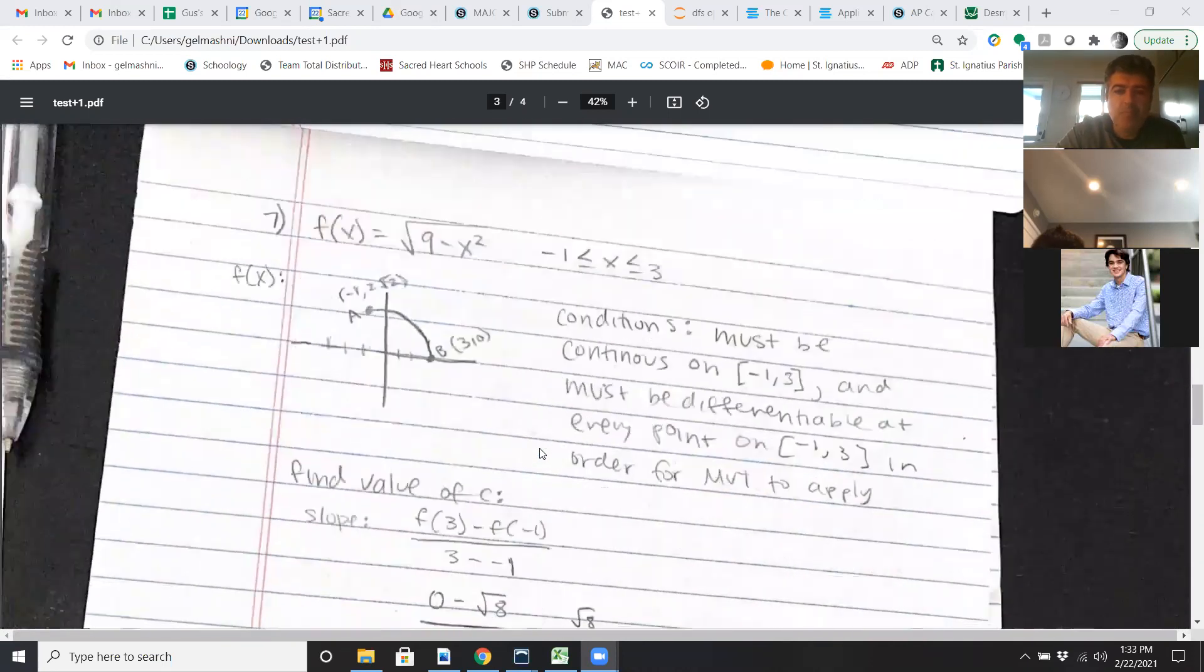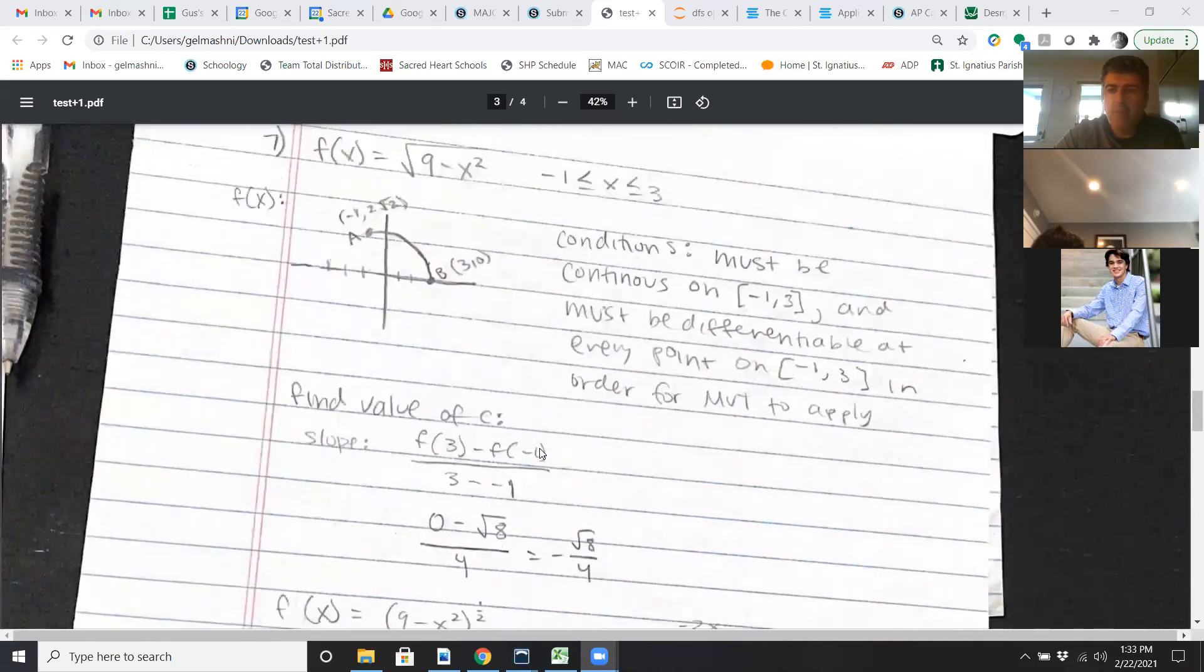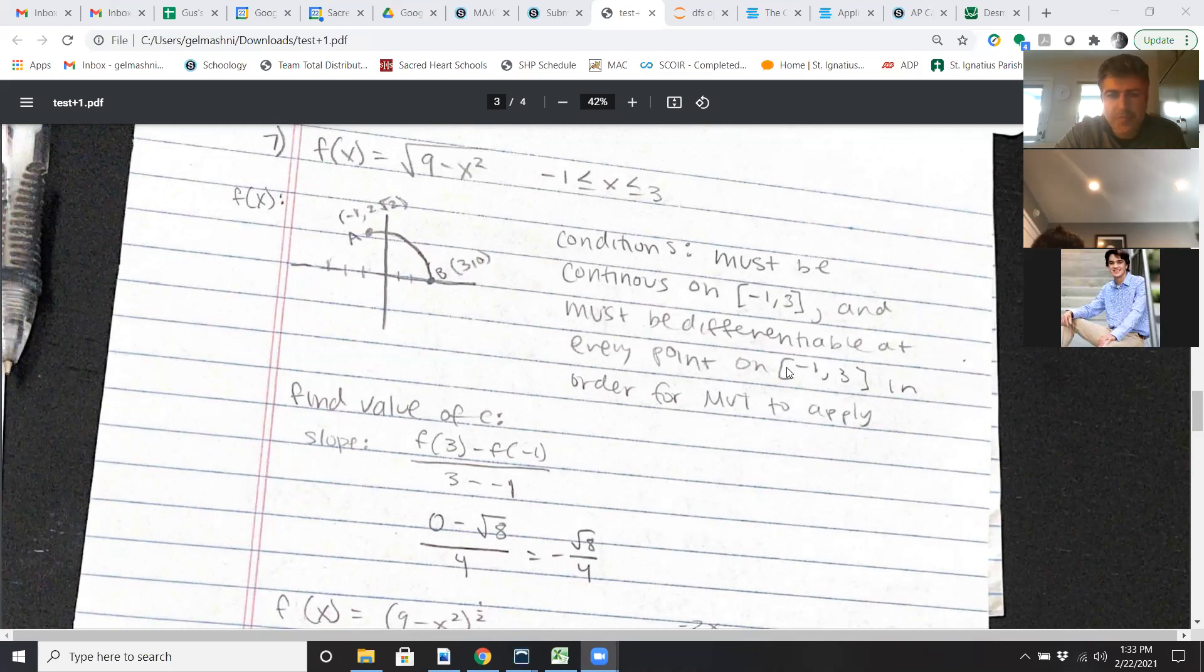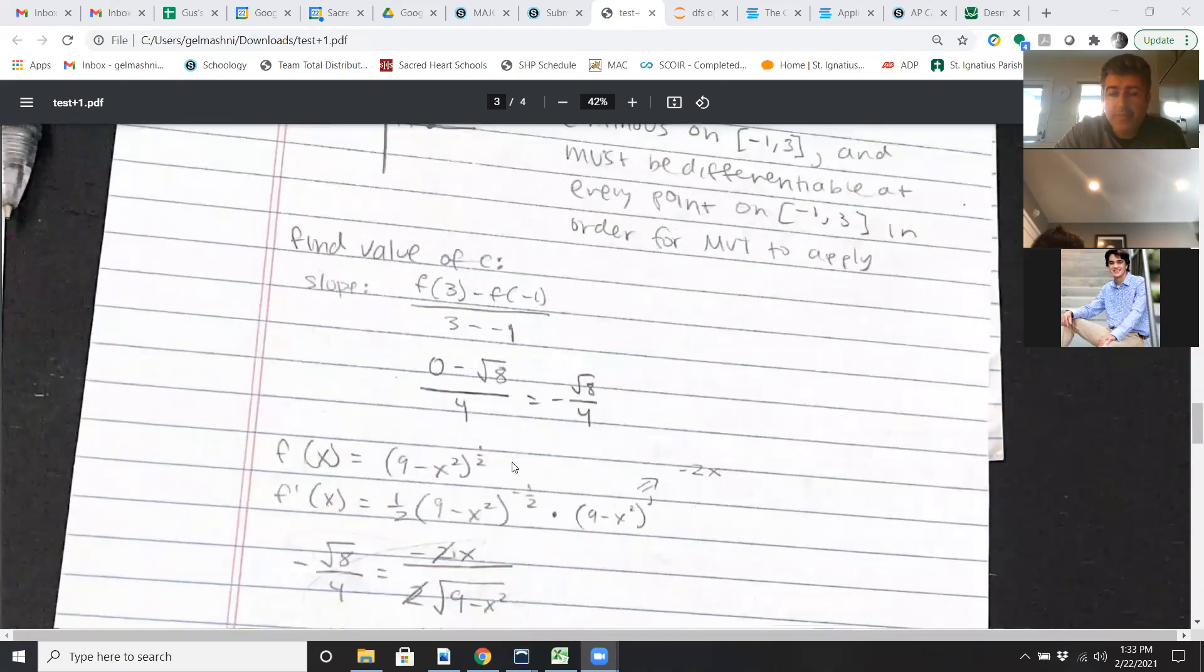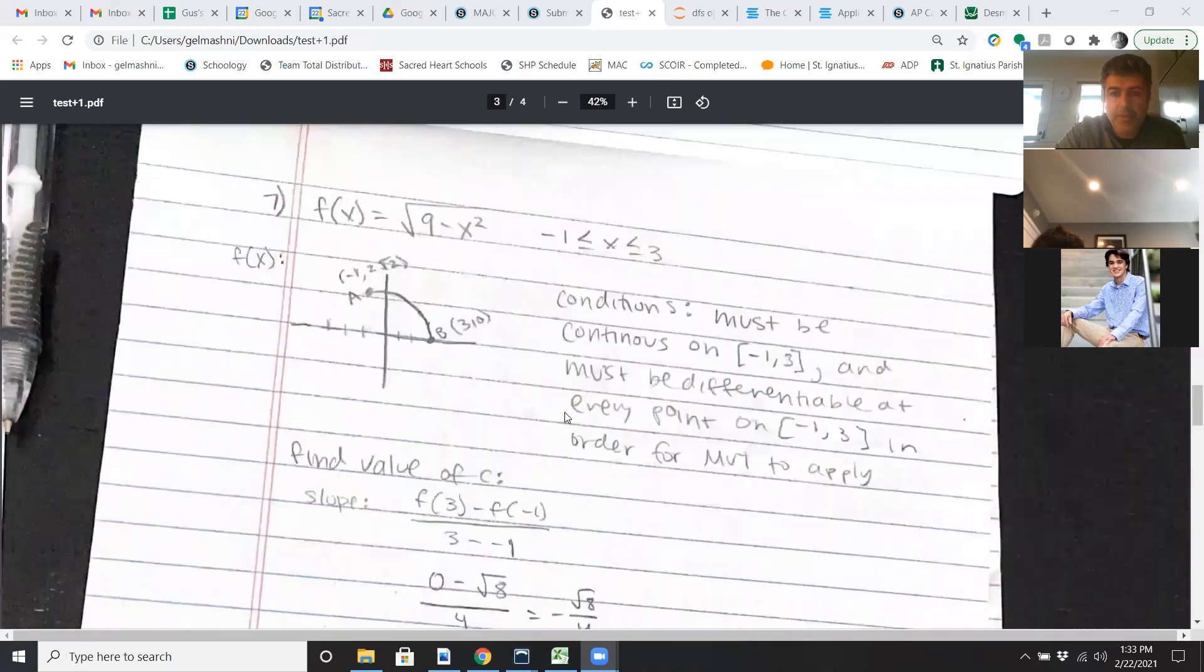For seven, the MVT problem. You got to do a sketch. That's easy. You got to see the conditions. You got to be differentiable in an open interval. You got to be closed. Actually, it should be open, not closed, but that's okay. But continuity has to be closed. And then you got to find the slope. F of B minus F of A, sorry, F of B minus F of A over B minus A. Which apparently is that. When you plug into the original function.